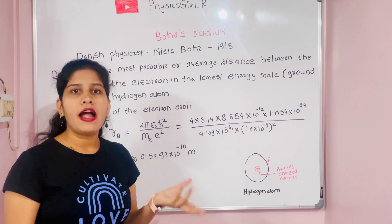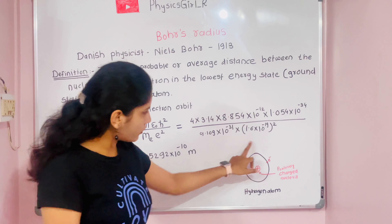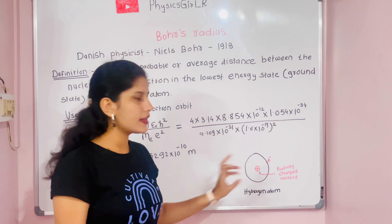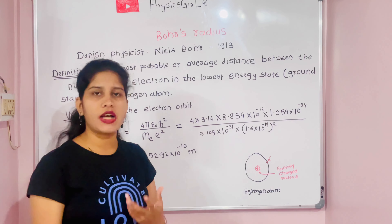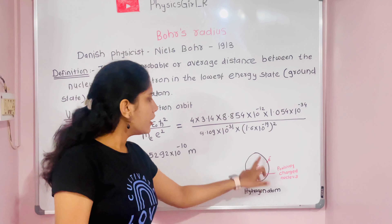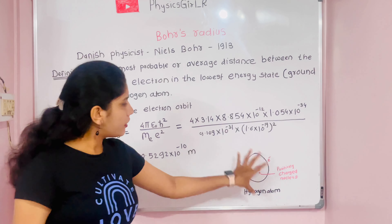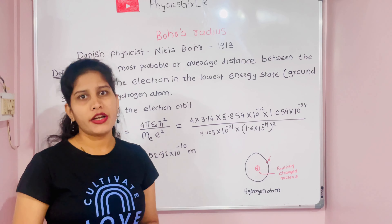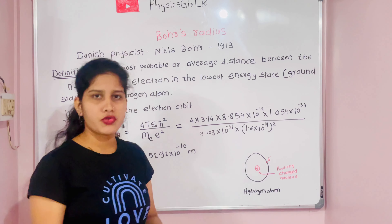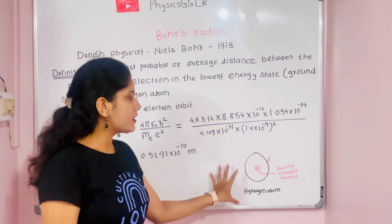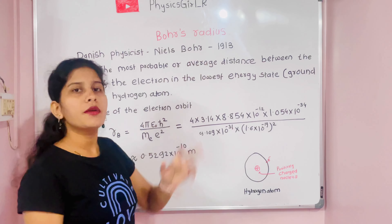Niels Bohr discussed this model and in that model he studied the hydrogen atom, that means a single electron system. We know that at the center there is a positively charged nucleus, containing protons and neutrons. The electron revolves around the nucleus, as given by Niels Bohr's postulates — postulate first, second, and third. According to those three postulates we described the hydrogen atom and from that he was able to discuss the Bohr radius.